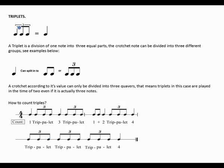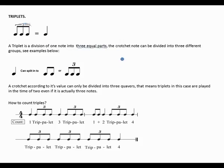Let's move along to triplets. This is how a triplet sign looks — just above the notes with a number three, representing triplets. A triplet is a division of one note into three equal parts, hence we put a three because it divides into three equal parts.